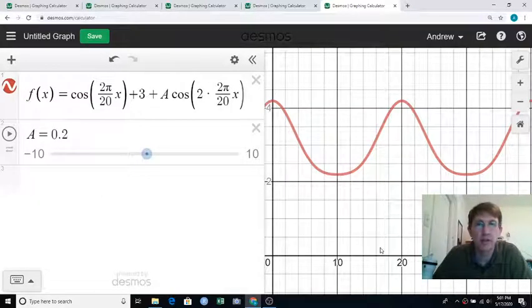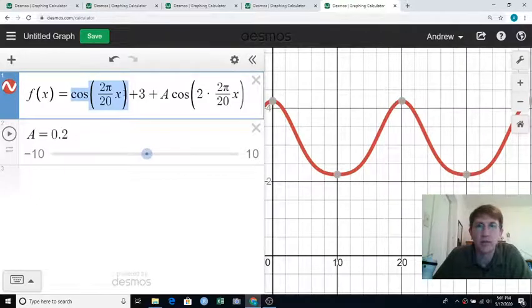All right, let's practice doing inflection point stuff in Desmos. Here I have a function. It starts out with a nice cosine wave. It looks a lot like what I had just sketched in the paper and pencil work.